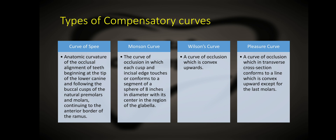Different types of compensating curves include curve of Spee, Monson curve, Wilson's curve, and pleasure curve. Curve of Spee is the anatomic curvature of the occlusal alignment of teeth beginning at the tip of the lower canine and following the buccal cusps of the natural premolars and molars continuing to the anterior border of the ramus. The Monson curve is the curve of occlusion in which each cusp and incisal edge conforms to a segment of a sphere of 8 inches in diameter with its center in the region of the glabella. Wilson's curve is convex upwards, and the pleasure curve in transverse cross-section conforms to a line which is convex upwards except for the last molars.